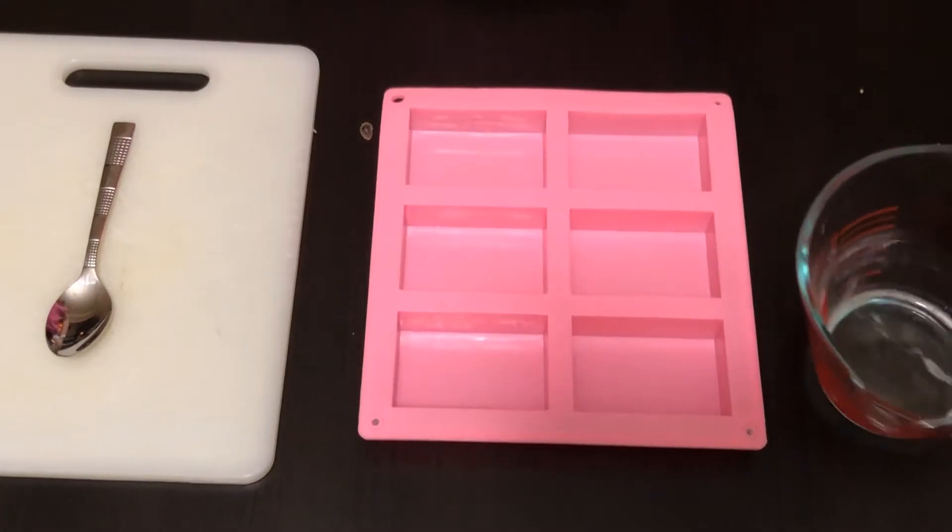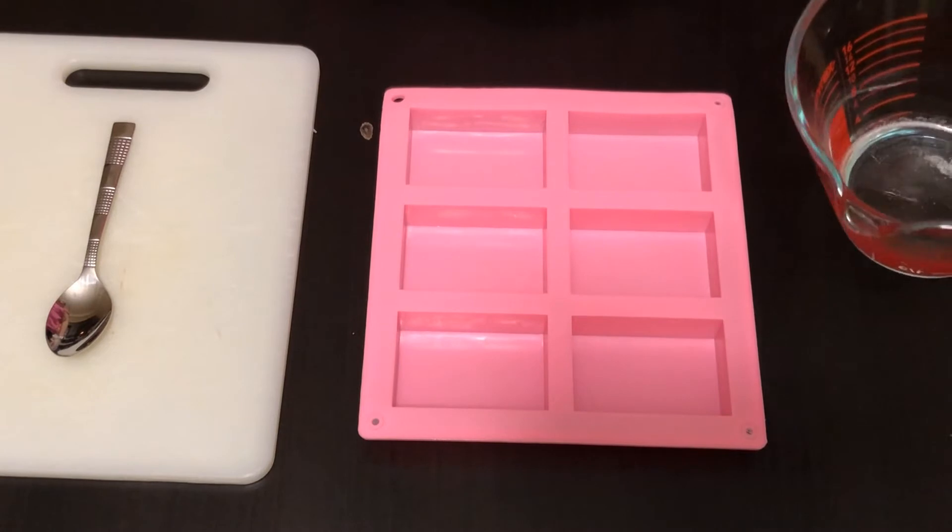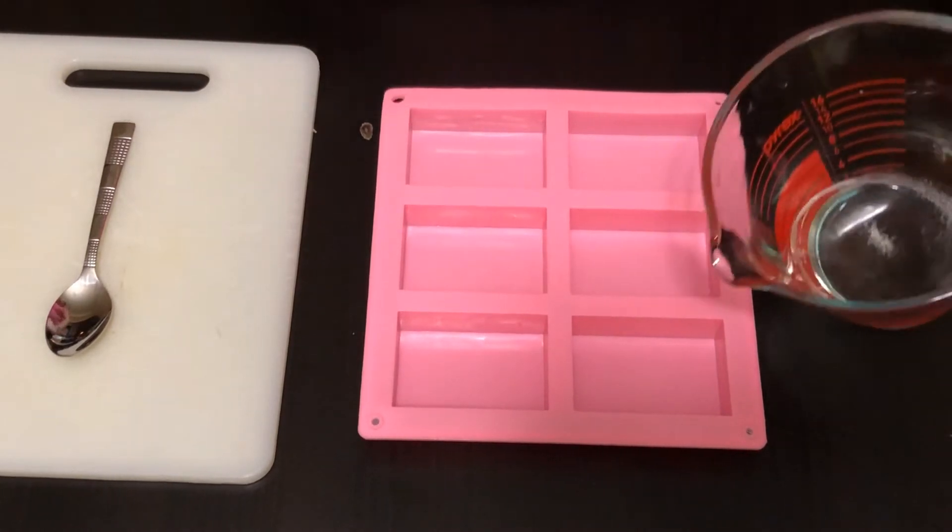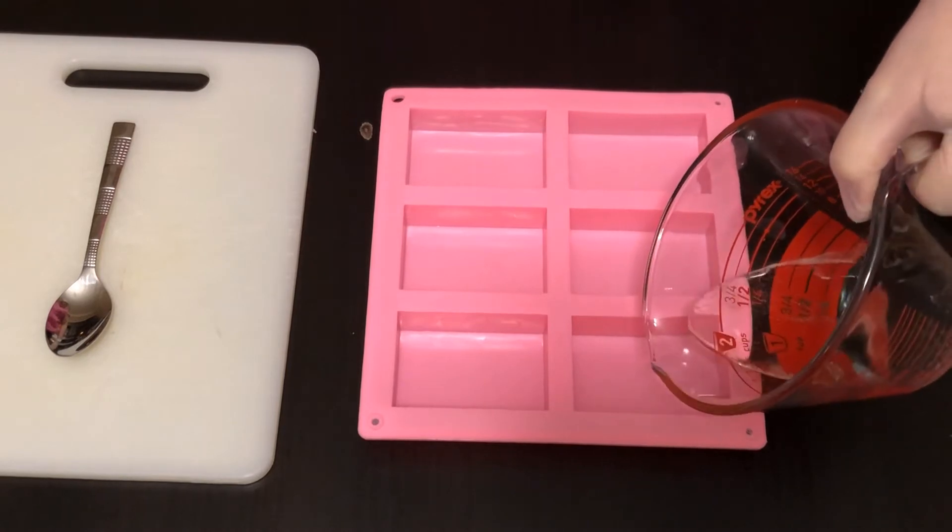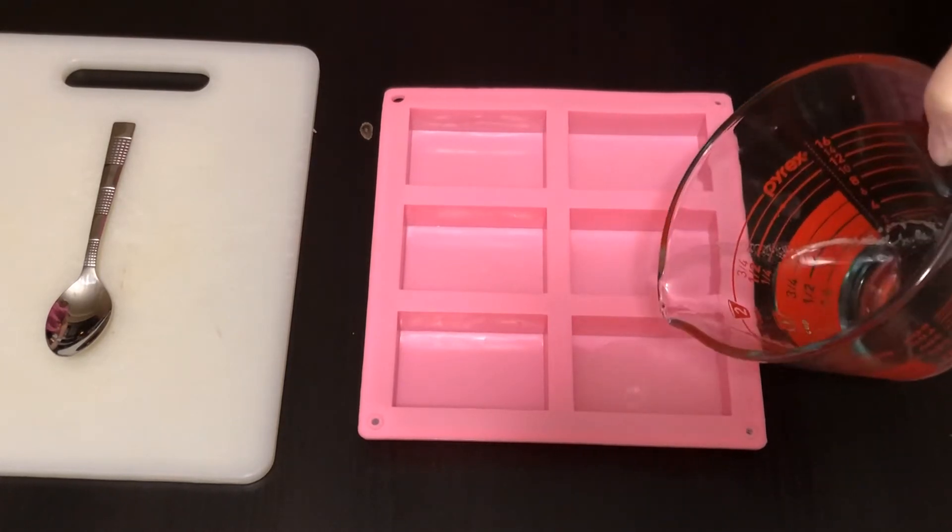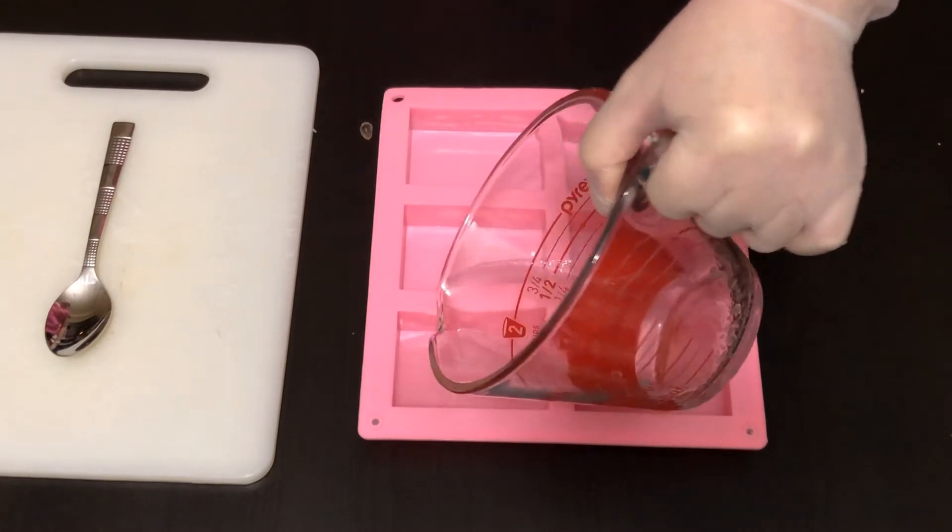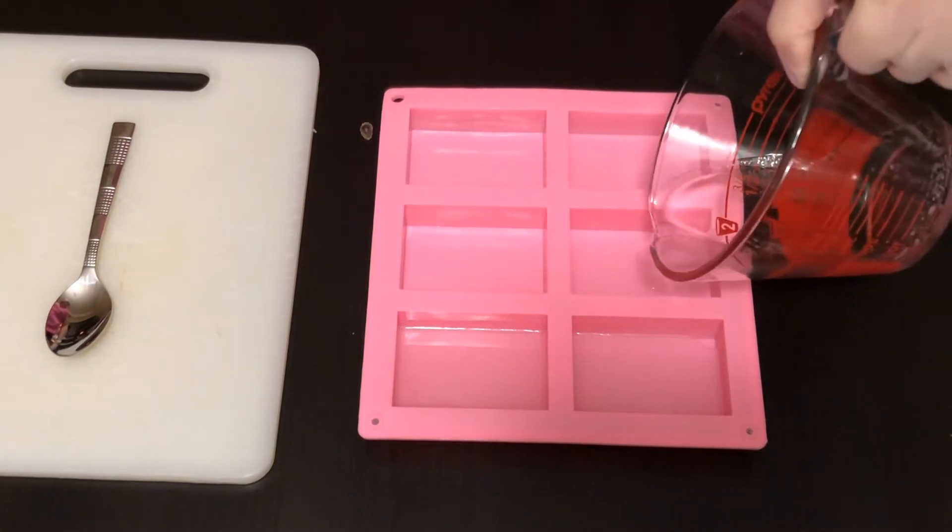Okay, so now that I have the clear melt and pour melted, we're going to go ahead and pour that into our mold and what this layer is for is basically just to keep our colored layer from running under our snowflake.